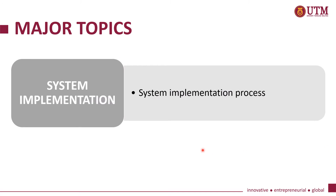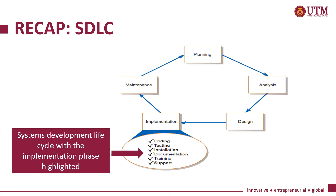System implementation is the process of ensuring that an information system is operational and then allowing users to take over its operation for use and evaluation. This slide shows the location of the implementation phase in the system development life cycle — it comes after the design phase and before the maintenance phase.